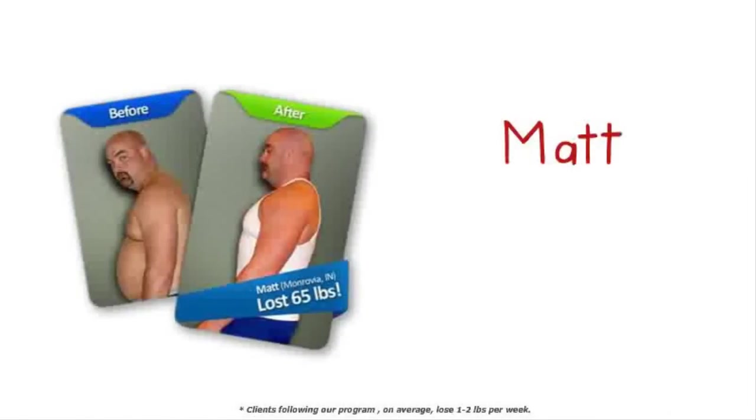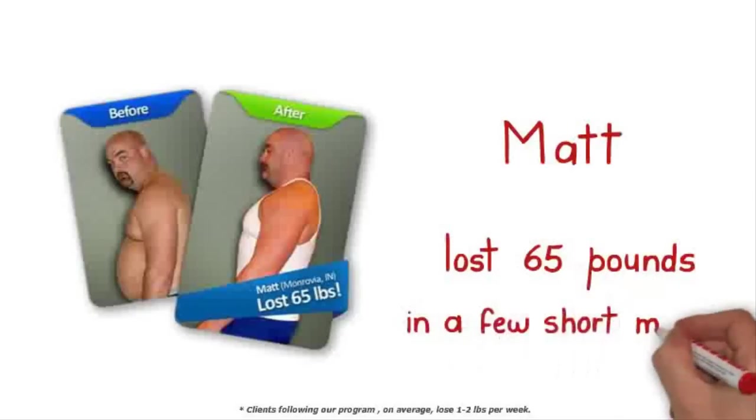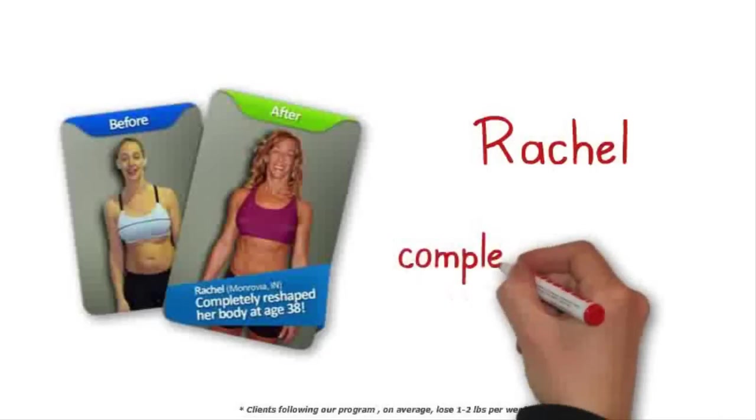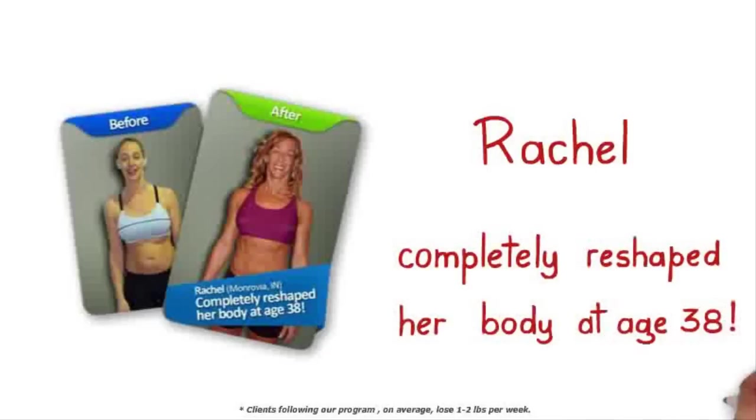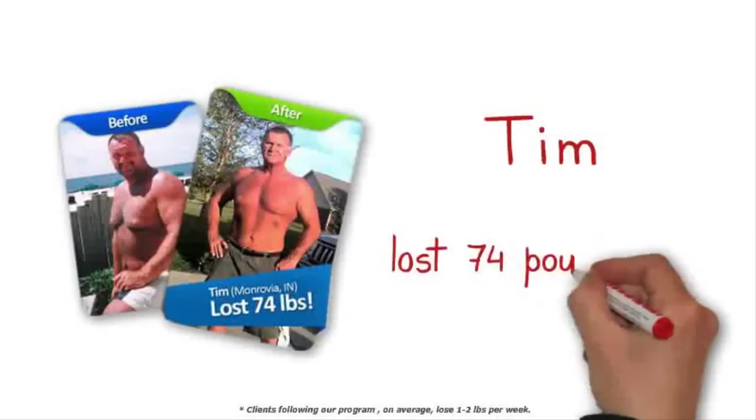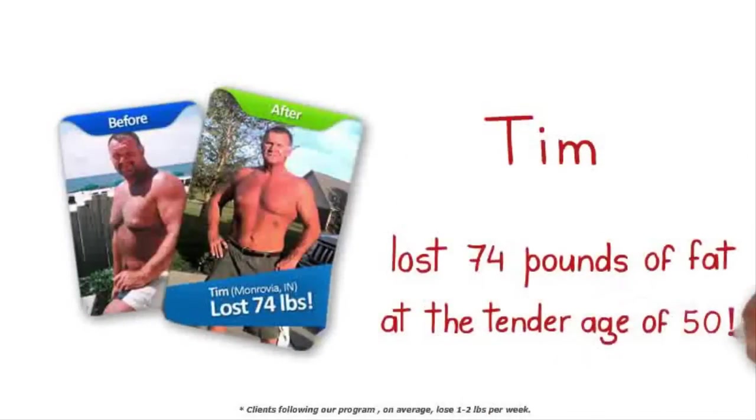Matt lost 65 pounds in a few short months and didn't just lose fat but replaced it with lean muscle. Or how about Matt's wife Rachel, who simply followed the Fat Loss Factor course with her husband. Rachel changed the shape of her body at age 38. And this is Tim. Tim lost 74 pounds of fat at the tender age of 50, even ran his first 5K race recently, something that he never would have dreamed of doing previously.